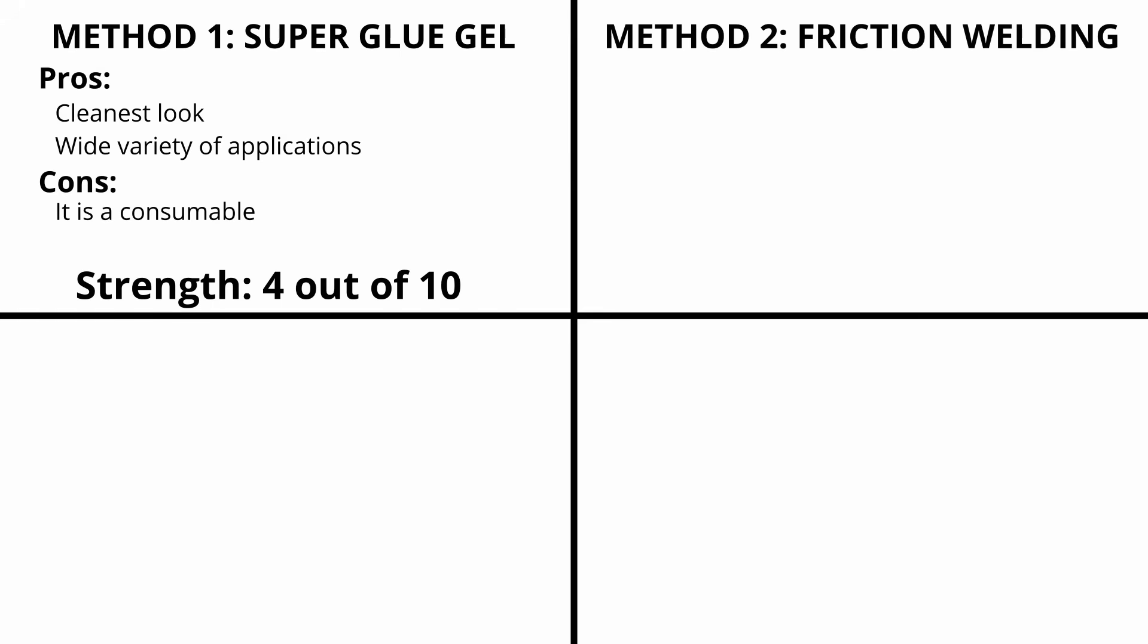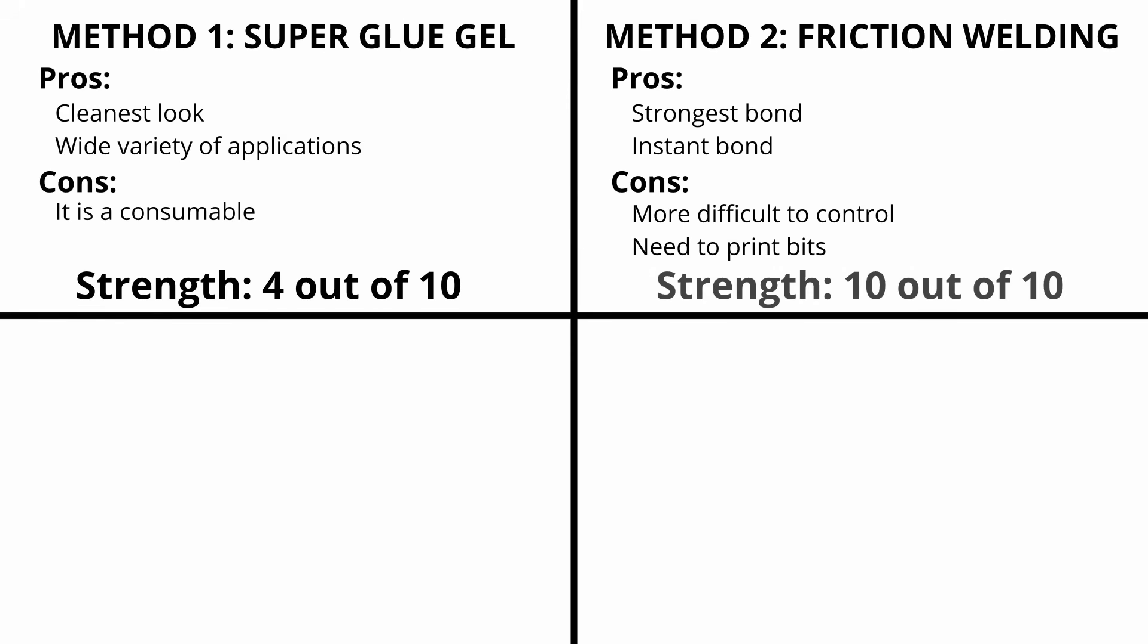The second method is friction welding. For the pros it was definitely the strongest bond plus it bonds instantly. For the cons it was a little more difficult to control plus you need to keep printing more of the bits. Strength was at a 10 out of 10.